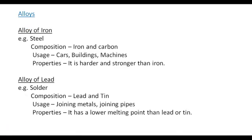An alloy of iron is steel. Steel is an alloy of iron and the composition is iron and carbon. We use steel to make cars, buildings, and machines. The properties are that it is harder and stronger than iron.